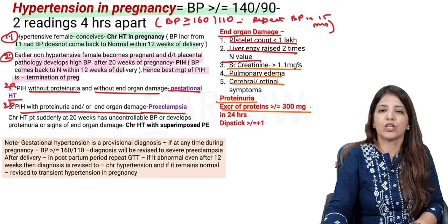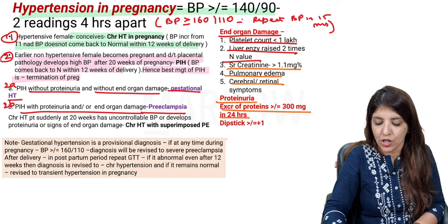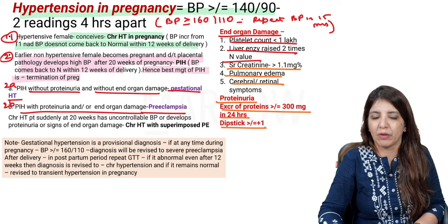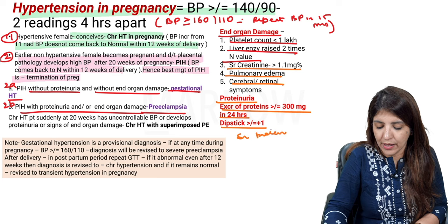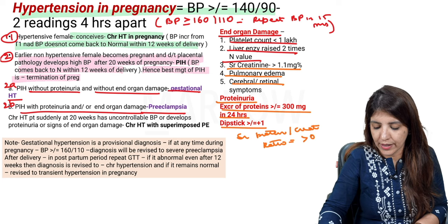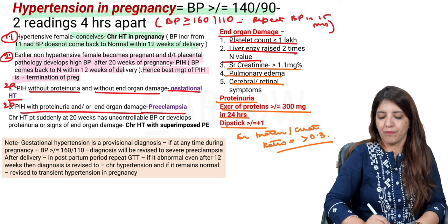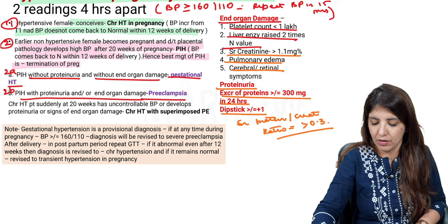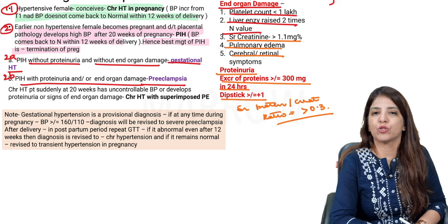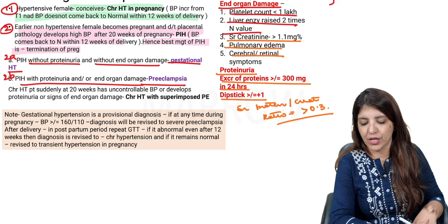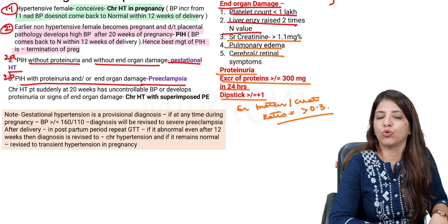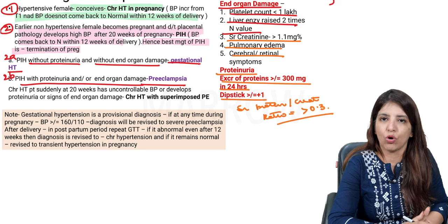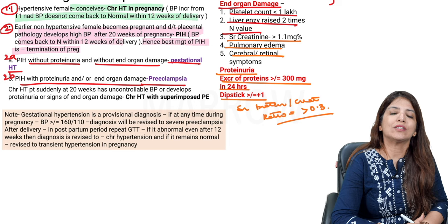Proteinuria is defined as excretion of proteins more than or equal to 300 milligrams in 24 hours, or more than or equal to plus one on dipstick, or protein-to-creatinine ratio more than or equal to 0.3.